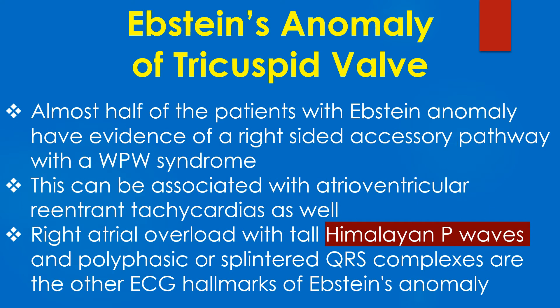Almost half of the patients with Ebstein's anomaly have evidence of a right-sided accessory pathway with WPW syndrome. This can be associated with atrioventricular reentrant tachycardias as well.